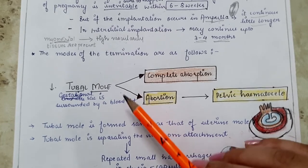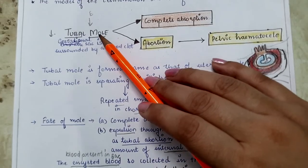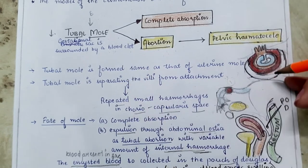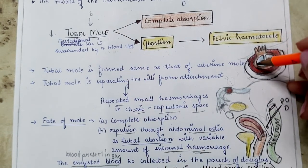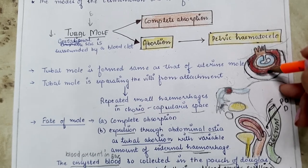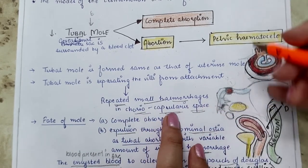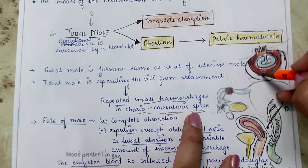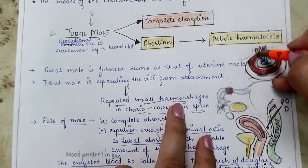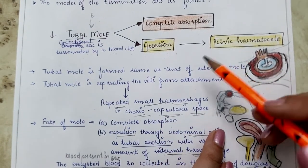There are four modes of termination: tubal mole, tubal abortion, tubal rupture, and tubal perforation. In tubal mole, the embryo is converted into a tubal mole — the gestational sac surrounded by blood — due to repeated small hemorrhages in the choriocapsular space (between the chorion and decidua capsularis), causing the chorionic villi to separate. The tubal mole either undergoes complete absorption or is expelled.